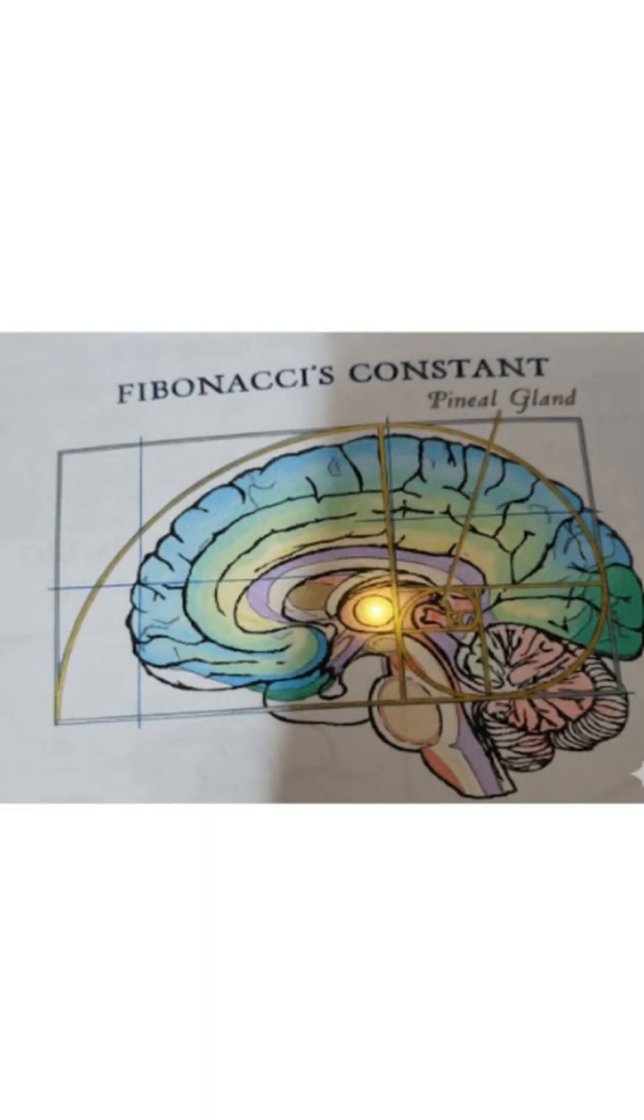According to certain metaphysical sources, if you construct golden spiral based on Fibonacci, it mirrors the anatomy of the human brain. When mapped starting from the pineal gland, often called the seat of the soul, the formula reportedly matches the brain's physical structure.